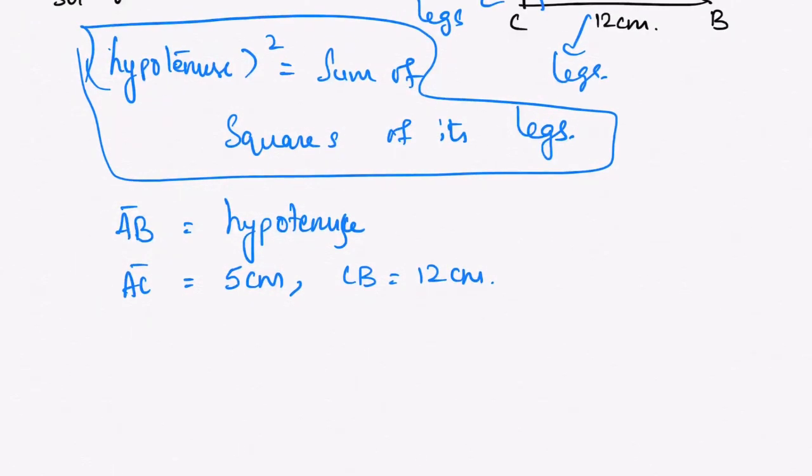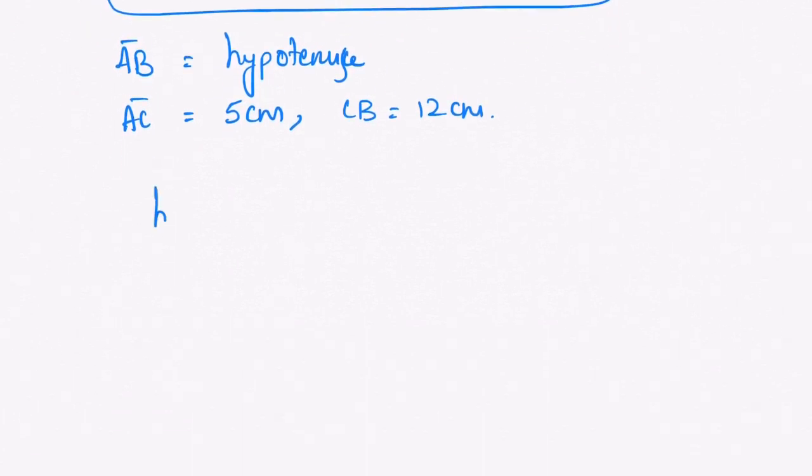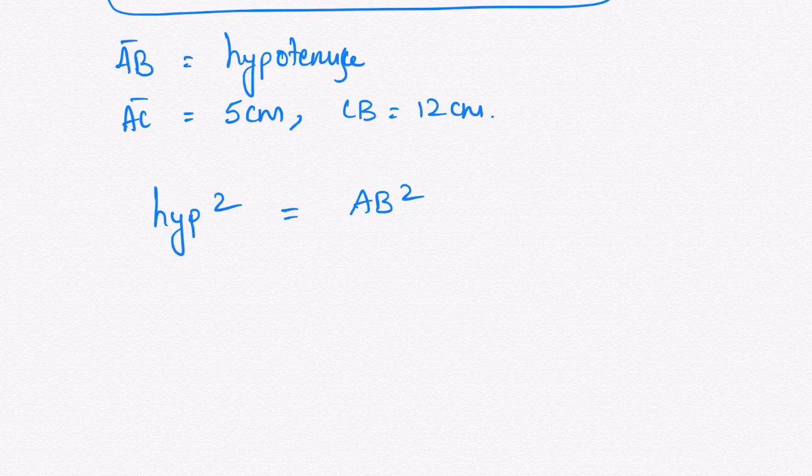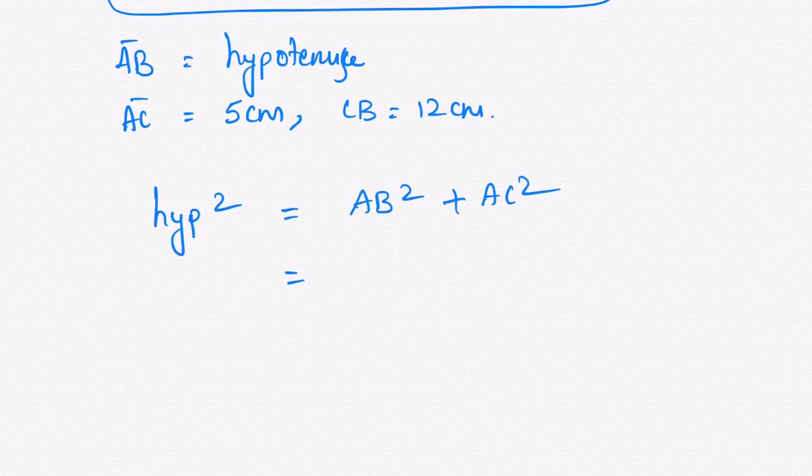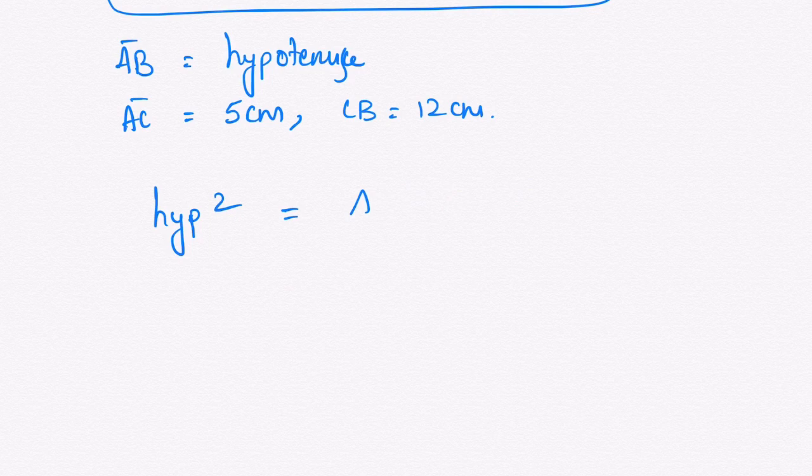Hypotenuse squared equals AB squared. So that is equals to AC square plus BC square, because these both are the sum of squares of its legs.